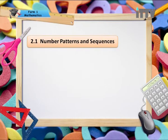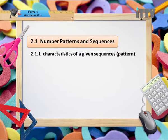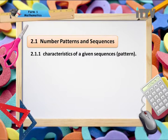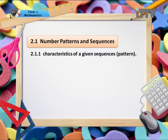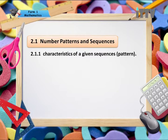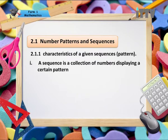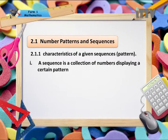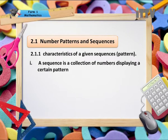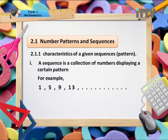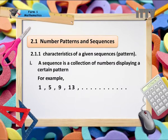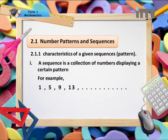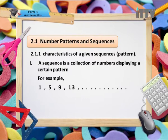Number Patterns and Sequences — Characteristics of a Given Sequence, also known as Pattern. A sequence is a collection of numbers displaying a certain pattern; for example, 1, 5, 9, 13 and so on.